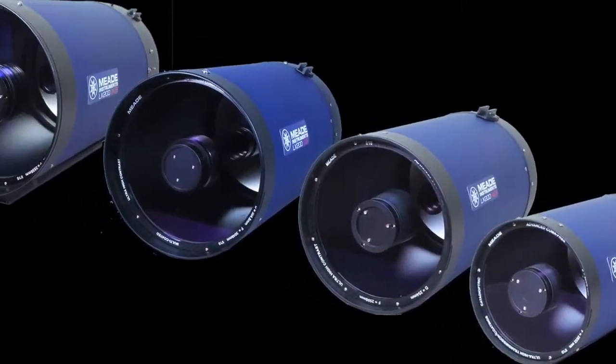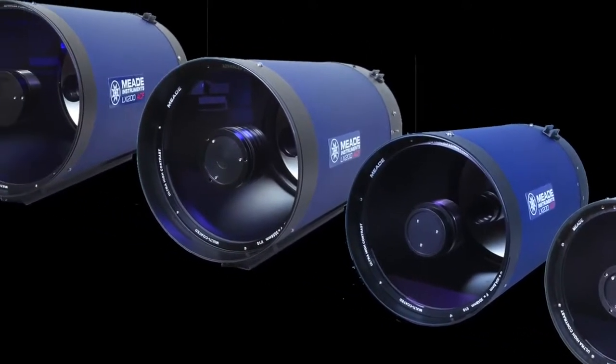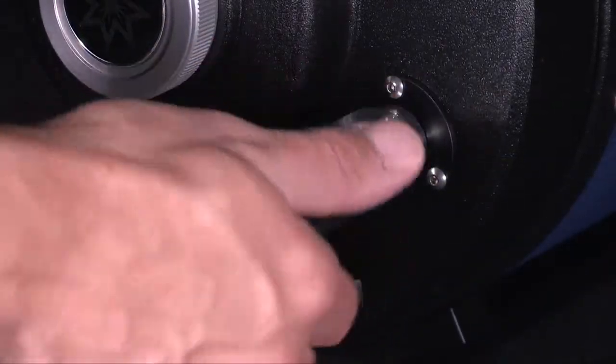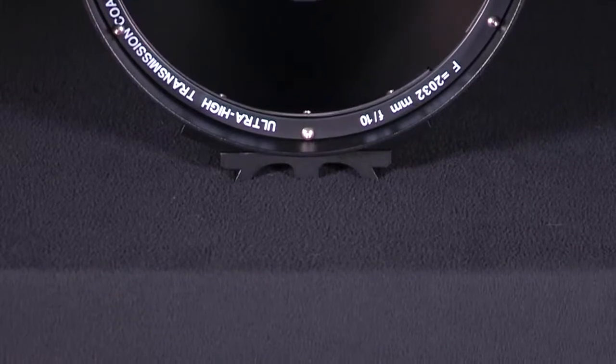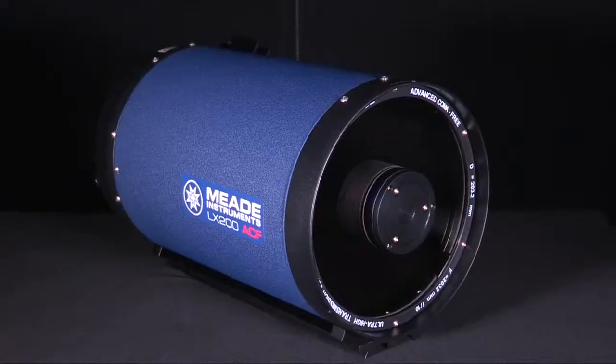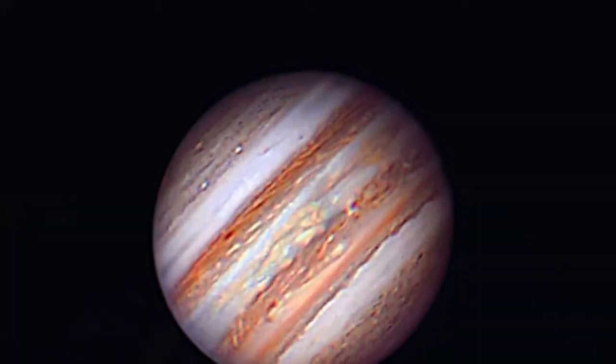The F10 optical tubes are available in 8-inch, 10-inch, 12-inch, 14-inch, and 16-inch apertures. These OTAs feature a single-speed mechanical focuser, a Lozmandy-style mounting rail, a primary mirror lock, and higher focal lengths that yield increased magnification, ideal for planetary and deep sky objects.